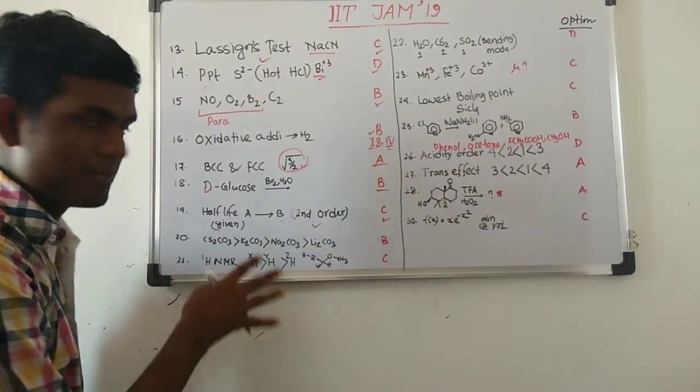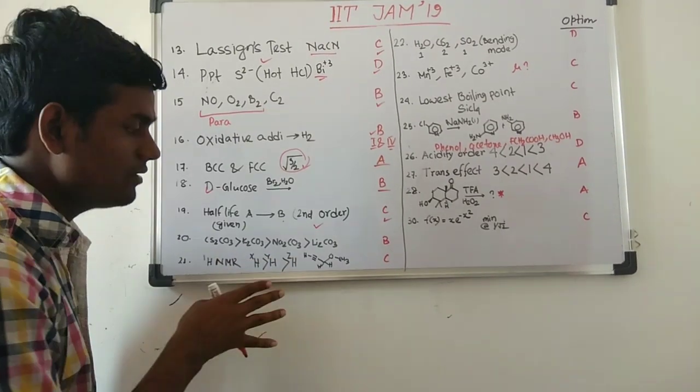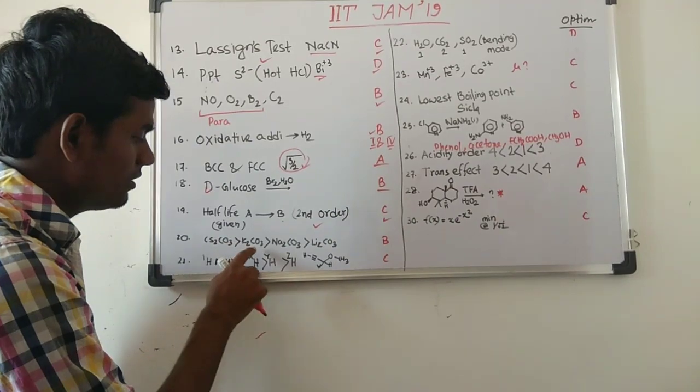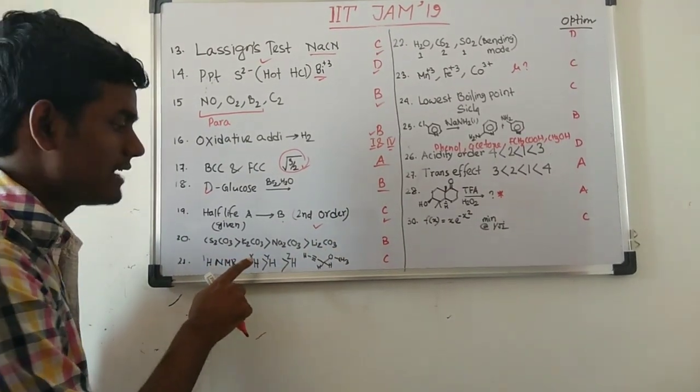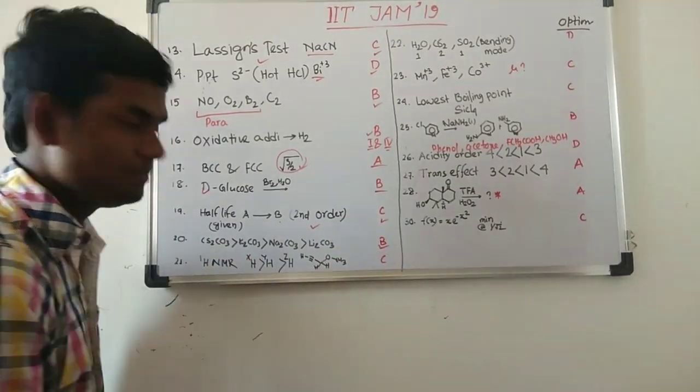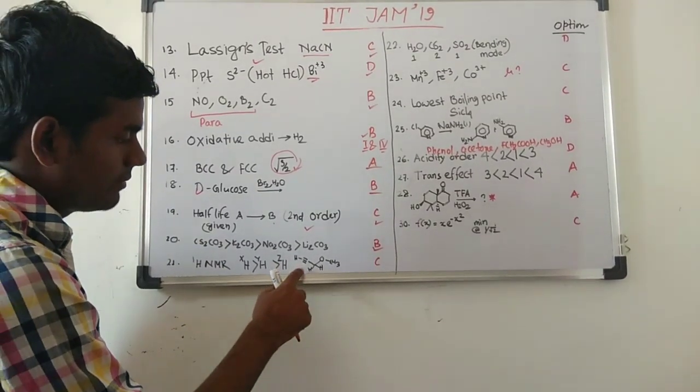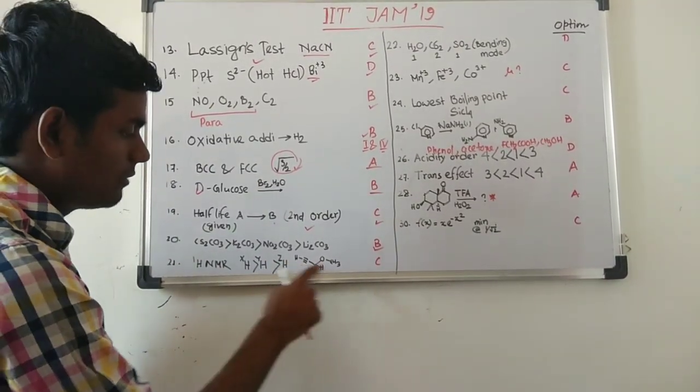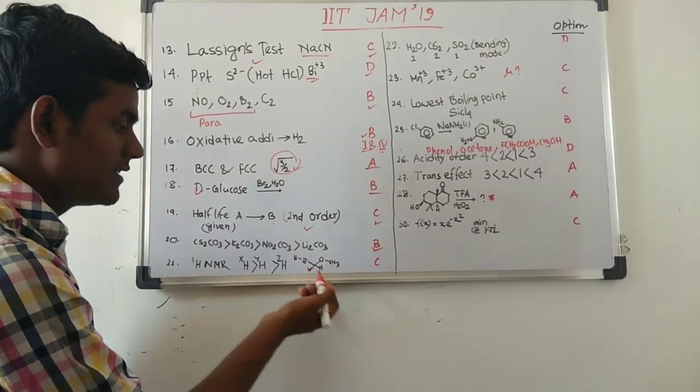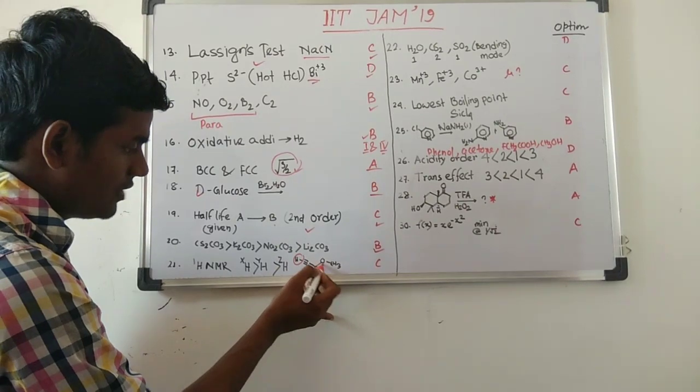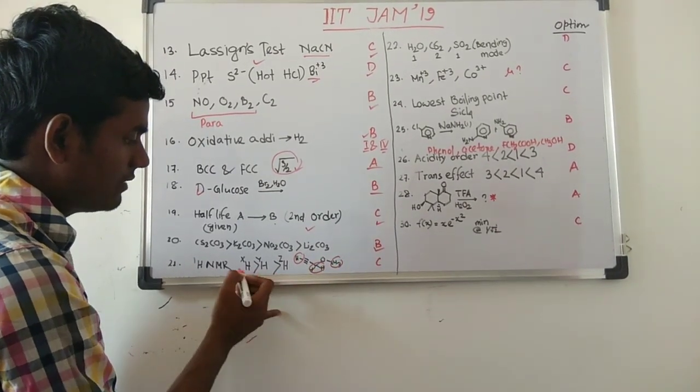Then they have given four options with different orders, and among the four options the solubility order cesium carbonate to lithium carbonate. If this one is the right answer, so option is D. And then they have given a compound and they have asked about the delta value of this proton. You can easily determine that HX is this one, HY is one, and HZ is this one, and this will be their order of sequence and the option is C.